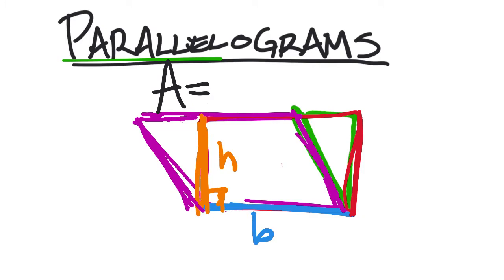And that's how we pretty much get that rectangle. So what does that mean for the area of the parallelogram? It means you're going to take the base value and multiply it by the height value. And from time to time, you'll see this as a dashed line — something like this.